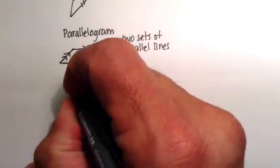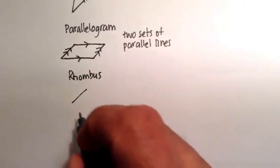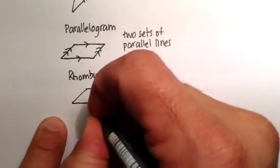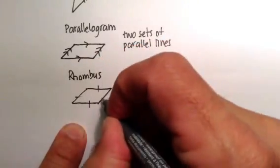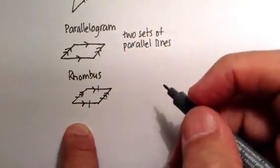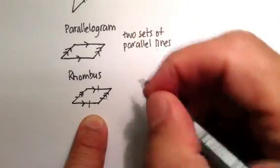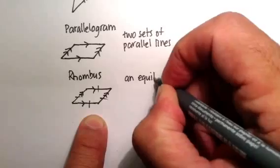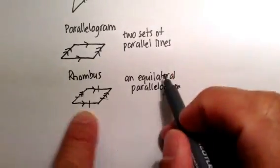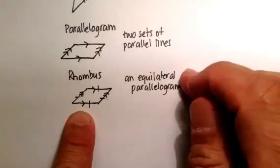Let's keep moving — rhombus. Let me draw one quickly. See if you can come up with a definition for a rhombus. A rhombus is an equilateral parallelogram. Let's take that apart: equilateral means all four sides are equal, and it's a parallelogram because it has two sets of parallel sides. So that's a rhombus.